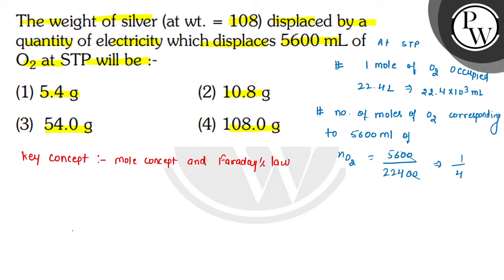Number of moles equals given weight divided by molecular mass. So 1 mole of oxygen produces 4 moles of electrons.